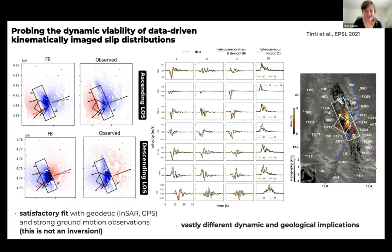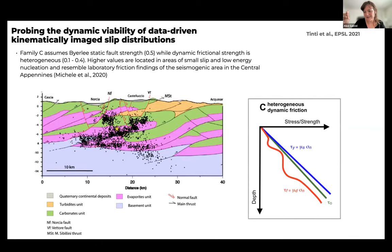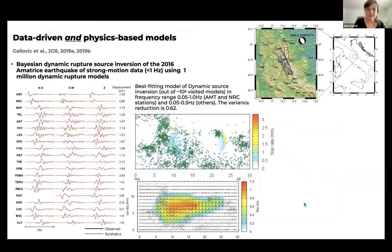Looking at geological inferences in Norcia, we see higher values of frictional strength in areas where we also infer small slip and low-energy nucleation, whereas different rock properties exist in areas of large slip patches. This points toward our Model C, with heterogeneous dynamic friction, as more realistic when geological inferences are included. So more physics doesn't always mean more models — it can actually reduce the model space. Going further, we can think about not inverting for a slip picture but inverting directly for dynamic parameters.